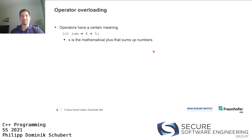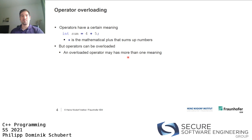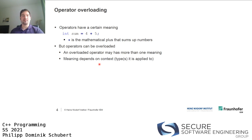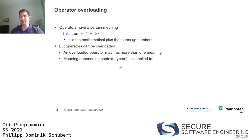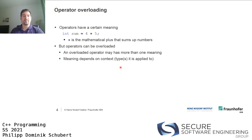Operators can be overloaded — an overloaded operator can have more than one meaning, encoding custom behavior. The meaning depends on context, specifically the types it is applied to. So if you design your own data type, say type X, you can define your own operator plus that takes a variable of type X on the left and right hand sides and does something with those two variables. This is a powerful instrument.